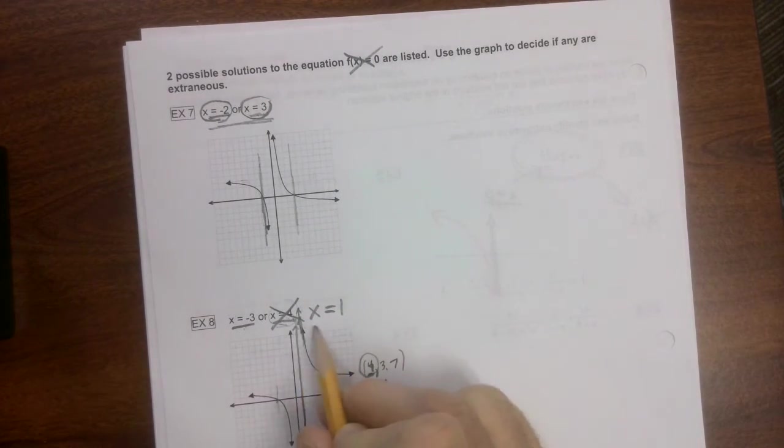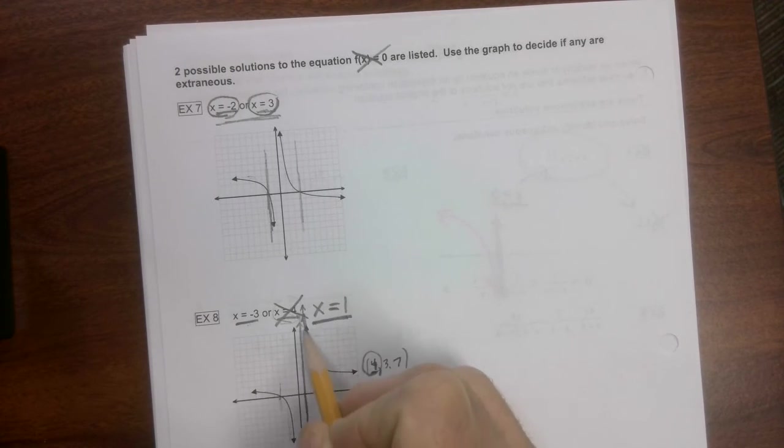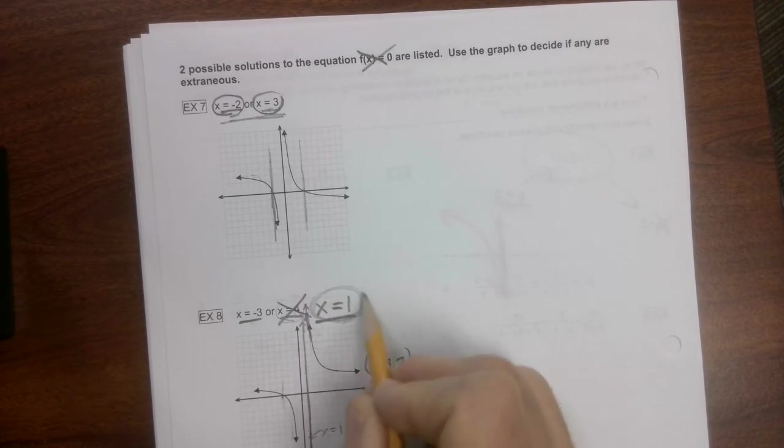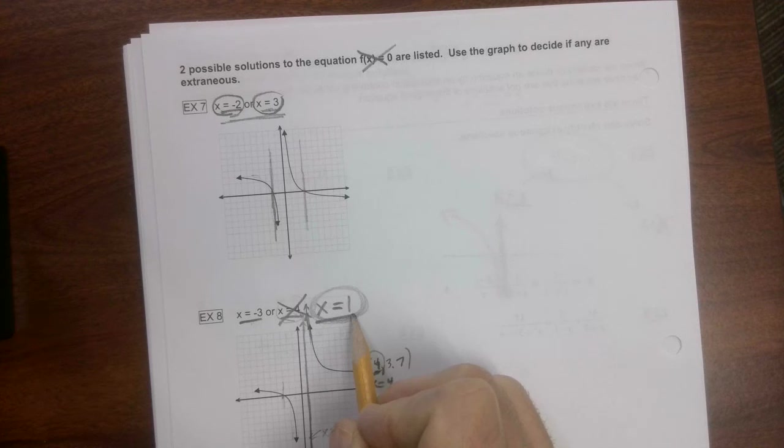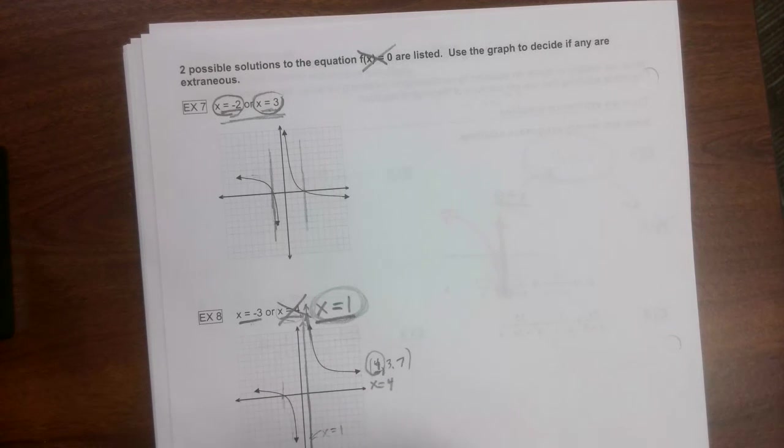We would say this is something that x cannot equal because the graph doesn't cross it. So this is very likely an extraneous solution or an extraneous root. I hope that doesn't cloud your clarity. I hope it clarifies it.